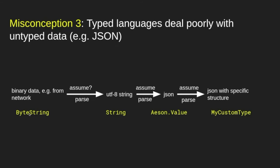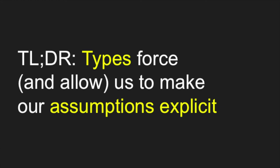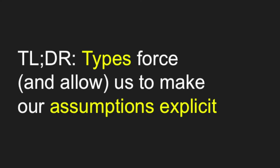From the network in Haskell, you would get a byte string, parse it to text, then parse it to a JSON value, and if you have a custom type with a specific structure, you parse it into that type. This is no different whether you have a typed or untyped language — it just allows you to specify it. To summarize: types force you and allow you to make your assumptions explicit. If you only want to forward binary data somewhere, you don't need to know what's in it. But if you want to work with data, you need assumptions, and types force you to verify those assumptions — which is very good for security.